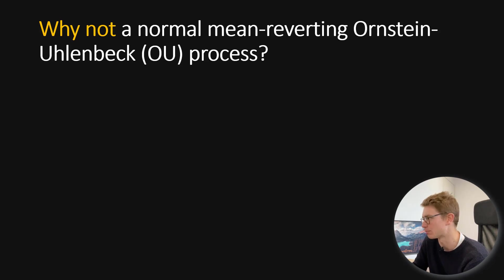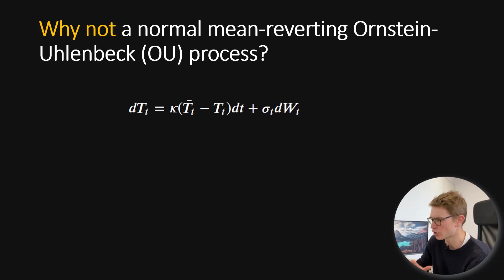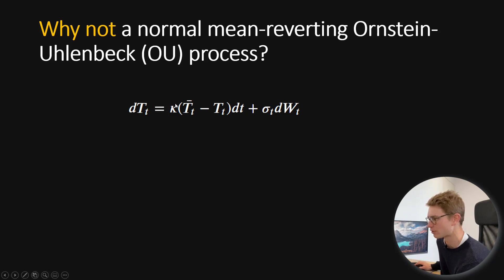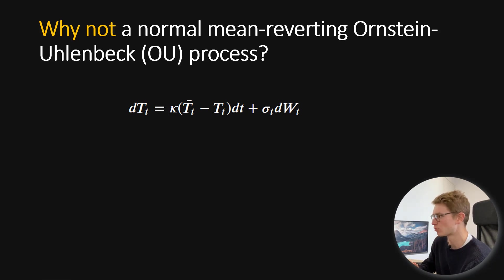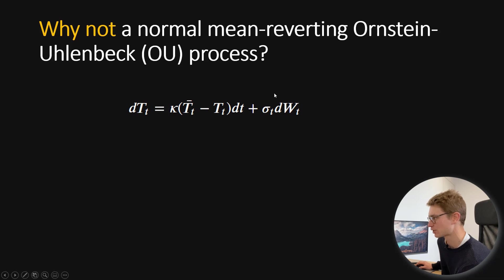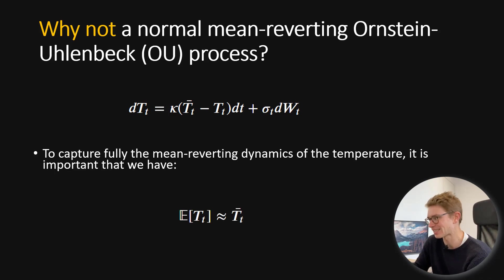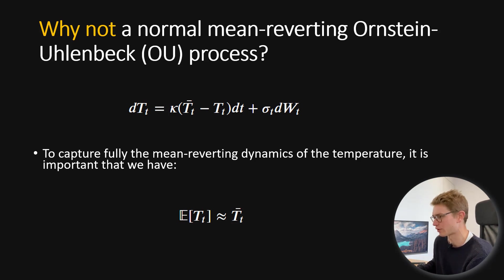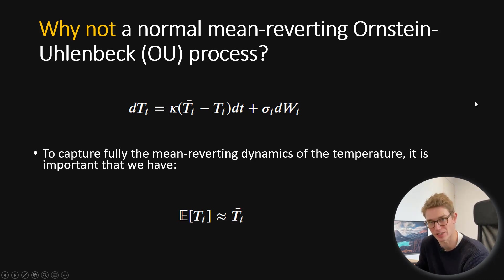Why would you not implement a normal mean-reverting Ornstein-Uhlenbeck process? Here is our general OU process: the change in temperature dynamics equals a mean reversion parameter kappa times our long-term average temperature minus the current temperature — that's the drift component — plus a time-dependent volatility component. This is a normal mean-reverting Ornstein-Uhlenbeck process with changing average temperature and changing volatility. If volatility were constant, you might call this the Vasicek model for interest rates.